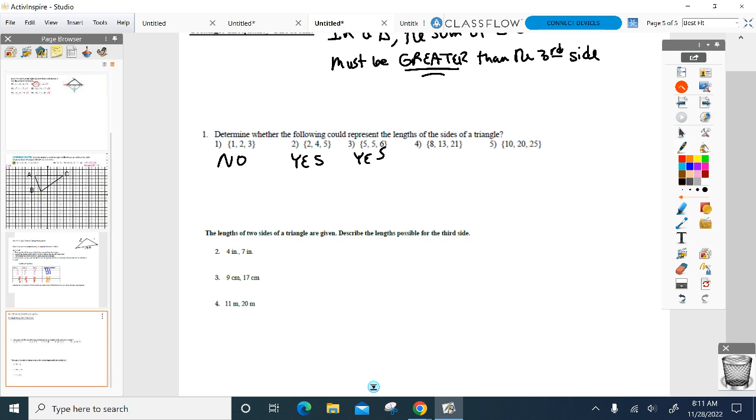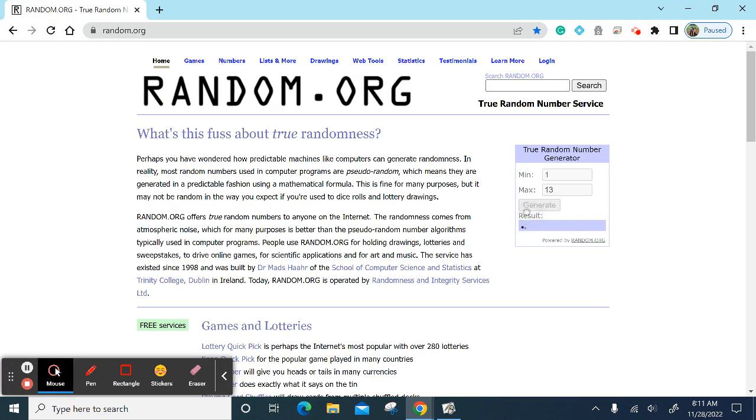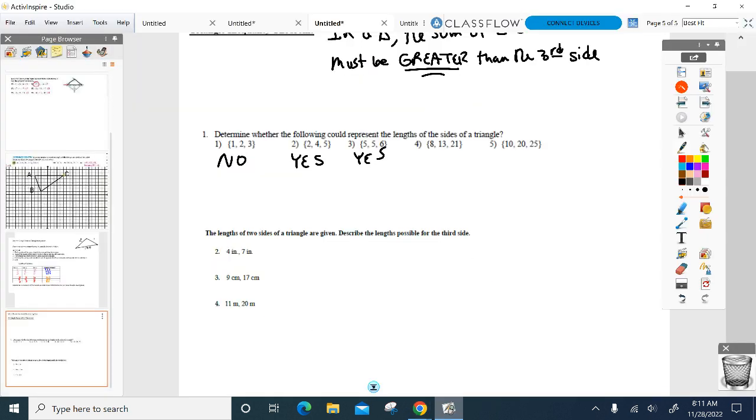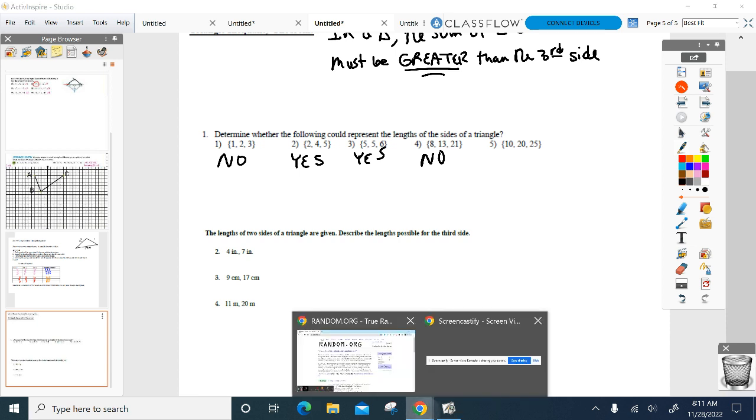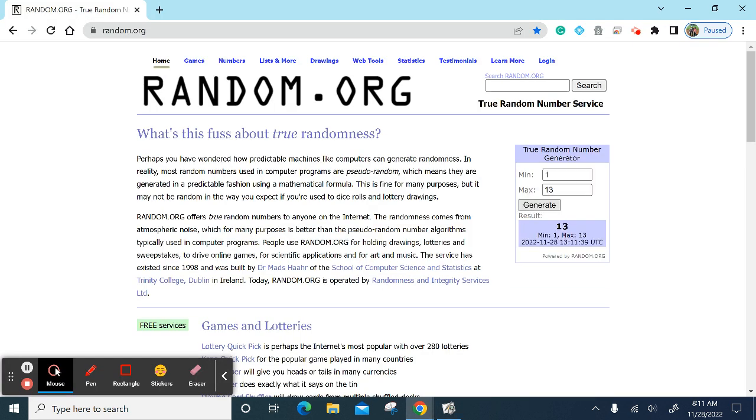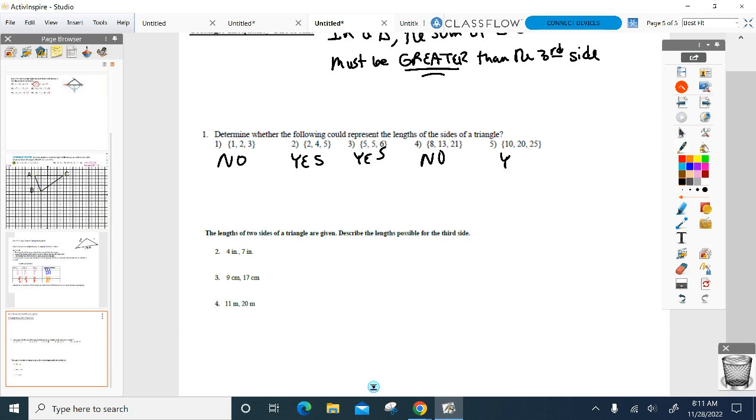8, 13, 21—triangle? Why not? Because 8 and 13 would be 21. Got to be bigger. Equal does not count. Got to be bigger. And 10, 20, 25? Yes. It does. All good. So that's one thing I need you to do: if I give you three sides, can I form a triangle or not?